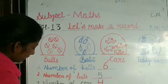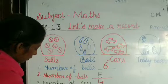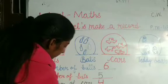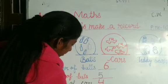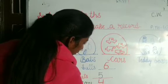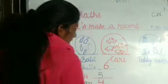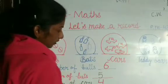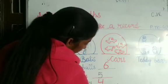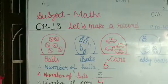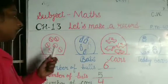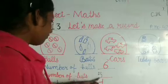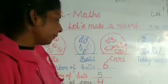And the next question: number of teddy bears. Let's count the teddy bears — one, two, three, four. So we have four teddy bears. So in this record we have: six balls, five bats, four cars, and four teddy bears.